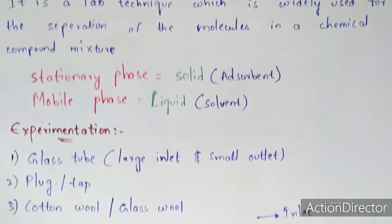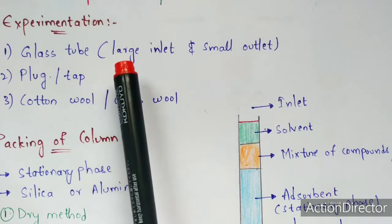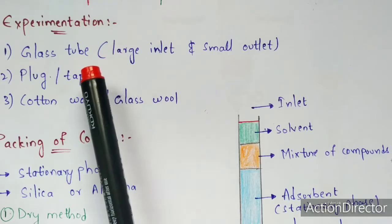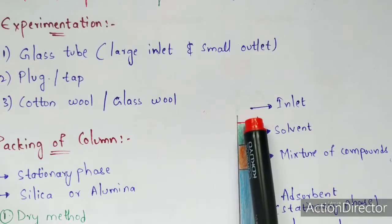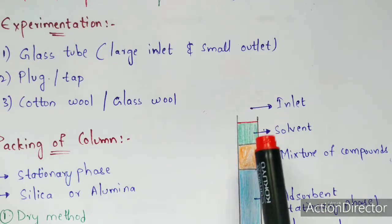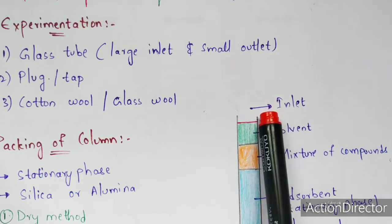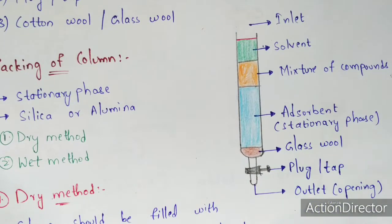For the apparatus, you need a glass tube that is 20 to 30 centimeters long and 2 to 3 centimeters in diameter. The glass tube has a large inlet at the top, where you add the mixture into the column, and a small outlet at the bottom from which the separated mixture gets eluted out.